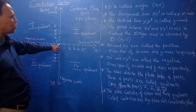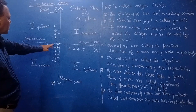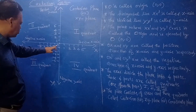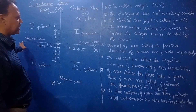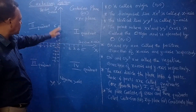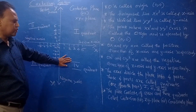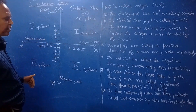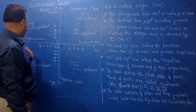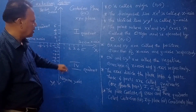OX is the positive X axis, OY is the positive Y axis, and OX-dash and OY-dash are the negative directions of the X axis and Y axis respectively. The axes divide the plane into four parts. Each one-fourth part is called a quadrant. We always name them in the anti-clockwise direction: first quadrant, second quadrant, third quadrant, fourth quadrant.